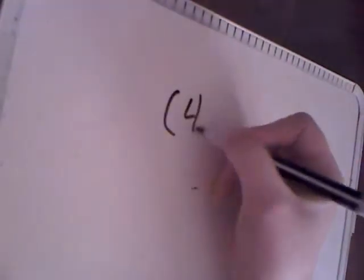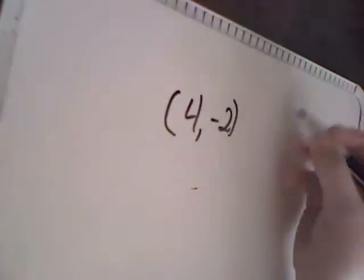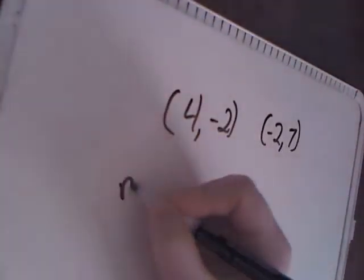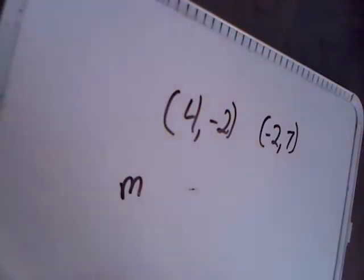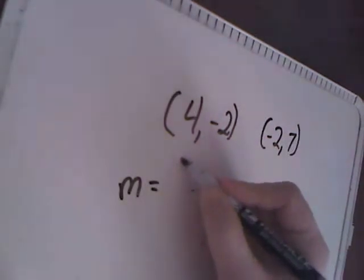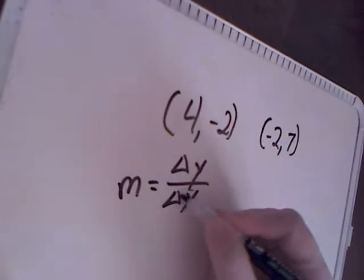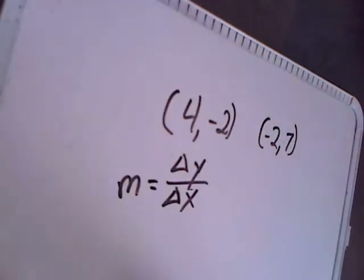To actually calculate slope, you need two points. So let's say I have the point (4, -2) and (-2, 7). The slope is defined as the letter m. That's just what it's used in equations. And to find the slope, you want to find the difference of y over the difference of x. Now what exactly does that mean?